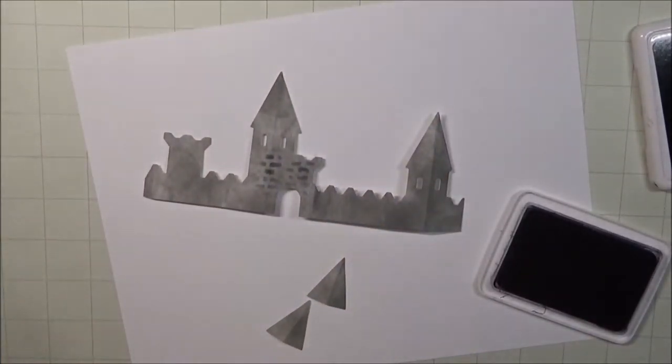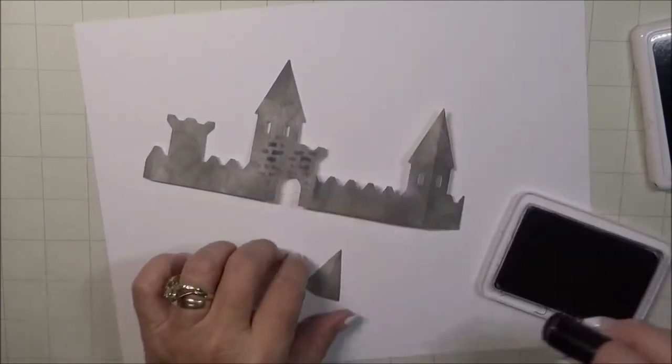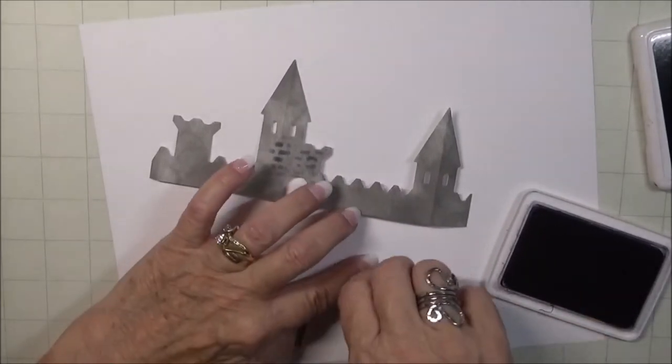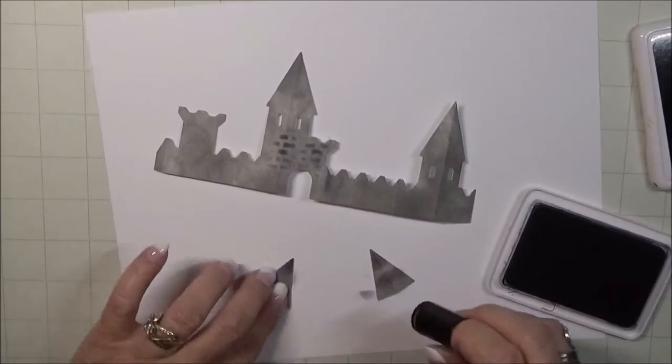I cut two roof pieces for my card. I wanted two covered turrets to make it just a little more spooky. And now I'm going to add some dark color to the roof pieces to make it appear that there might be shingles or slate.